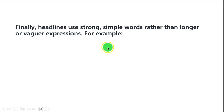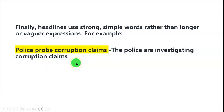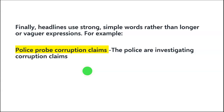Finally, headlines use strong, simple words rather than longer or vaguer expressions. For example: 'Police probe corruption claims.' The correct sentence is 'The police are investigating corruption claims.' The newspaper version is shorter. They use short sentences because space is limited. These are the key things which are different about newspaper English.